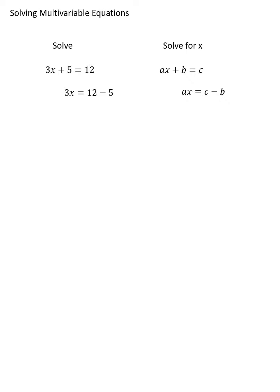Now the difference between these two equations is that the one on the left I can simplify: 12 minus 5 is 7. But by contrast, the one on the right, I can't simplify c minus b because I don't know the values of c or b, so I'll leave that the same.